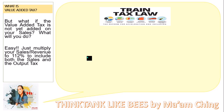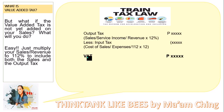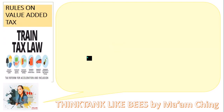But what if the value-added tax is not yet added on your sales? Just multiply your sales or revenue by 112% to include both the sales and output tax. Through the output tax, we have the sales or service income or revenue multiplied by 12% to get the output tax, then subtract the input tax. Because input tax is already embedded with the 12% VAT, you need to get the total amount of cost and expense divided by 112 times 12 to get the value-added tax. Output tax minus input tax equals the value-added tax.